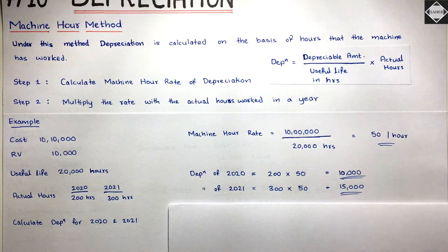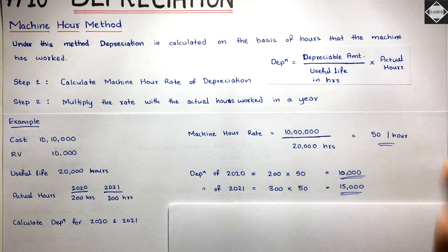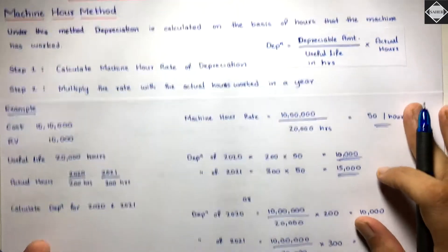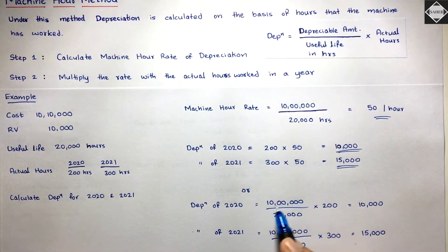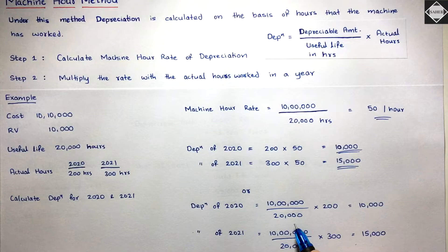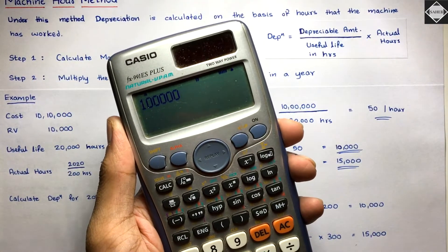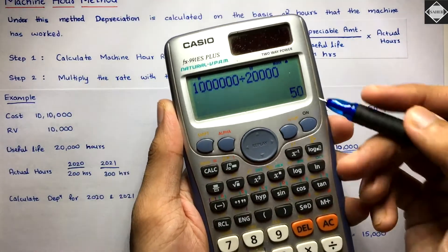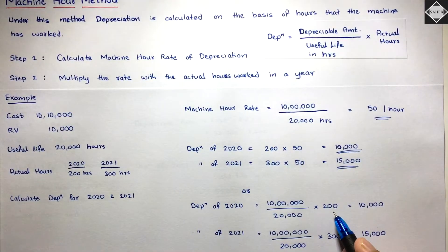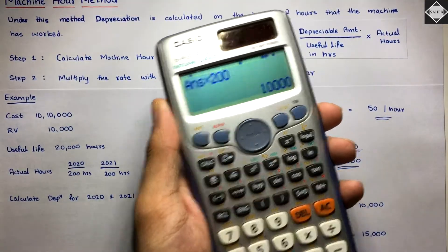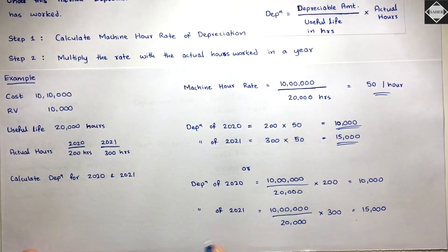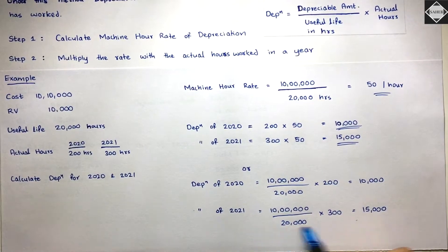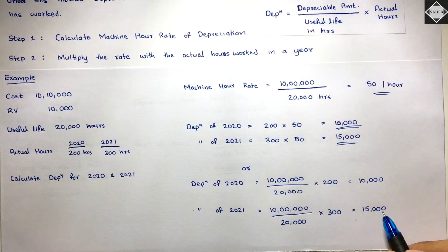In the exam, you directly apply the formula: depreciable amount ÷ useful life in hours × actual hours. For 2020: 10 lakh ÷ 20,000 × 200 = 10,000. For 2021: 10 lakh ÷ 20,000 × 300 = 15,000. That's all you need to do.